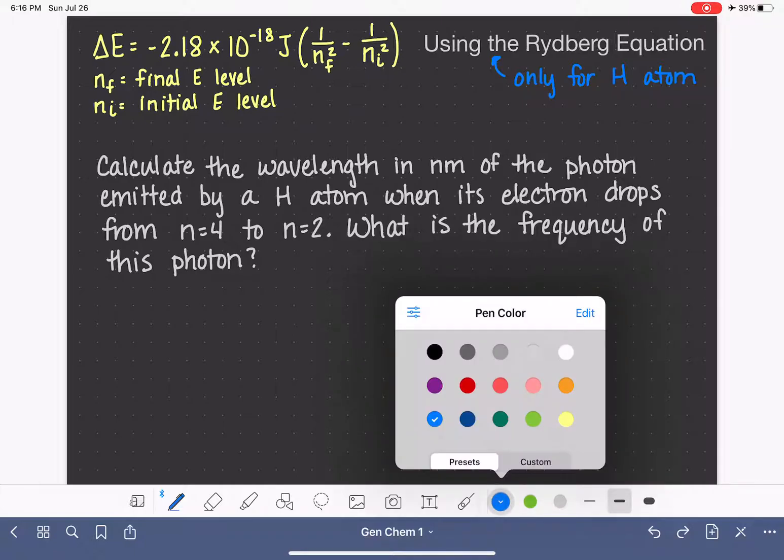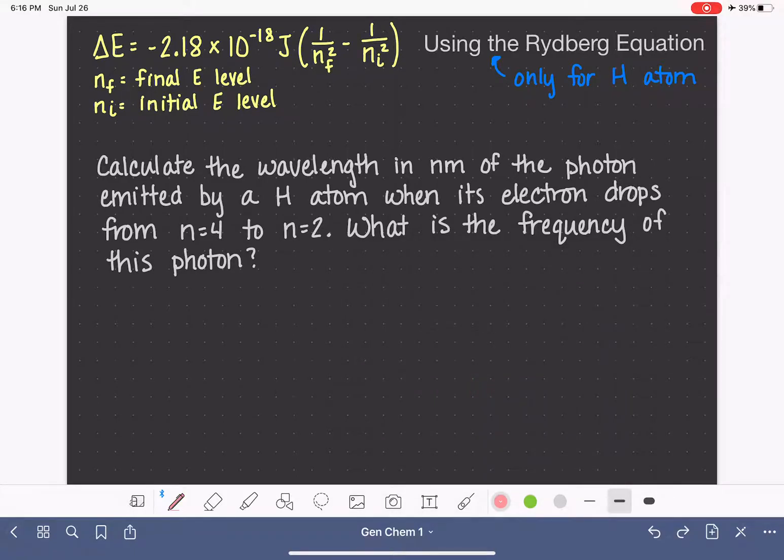Let's go ahead and start by plugging this stuff into the Rydberg equation. Now you might be saying, wait a minute, this problem is not asking us to calculate the change in energy, it's actually asking us to calculate the wavelength. But we do have a way of going from delta E to the wavelength, or delta E to the frequency. So we have to start with delta E, and then we will convert it as necessary.